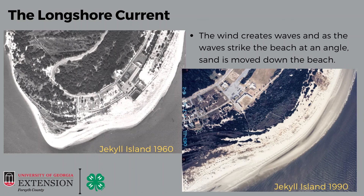Take a look at these two pictures of Jekyll Island — they look vastly different. The wind creates waves, and as those waves strike up against the beach at an angle, the sand actually moves down the beach. During the spring, winter, and late fall, the winds tend to come from the northeast, and as those winds come in, they help carry the sand to the south.